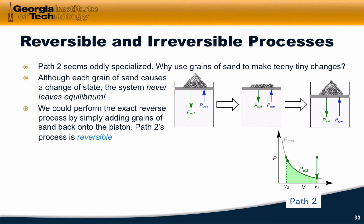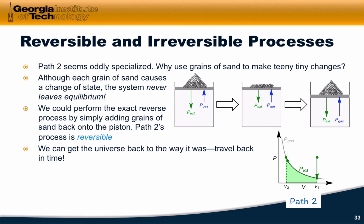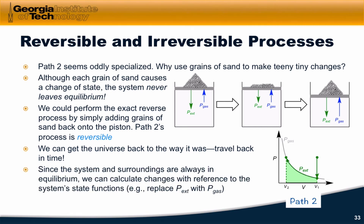Adding sand back would not change the situation of the system or surroundings in any way. Path two's process is what we call reversible — we can actually go back in time and revert the system back to the way it was without any change in the surroundings whatsoever. And since the system and surroundings are always in equilibrium, we can calculate changes by referring to only the system state functions, since the external pressure is always equal to the gas pressure. We can replace the external pressure with the gas pressure, which is highly convenient if we know the system obeys a certain equation of state like the ideal gas law.